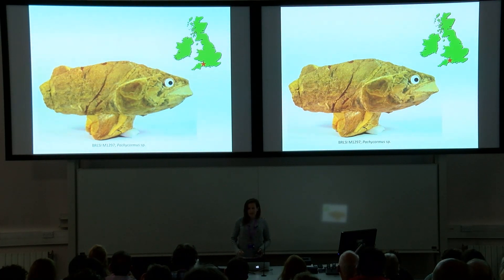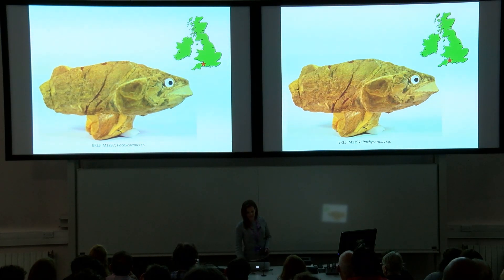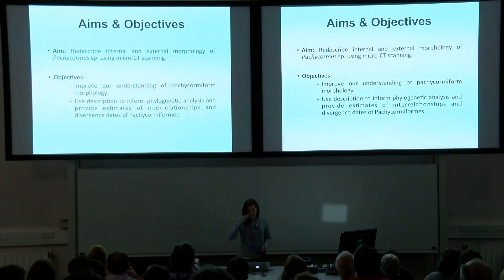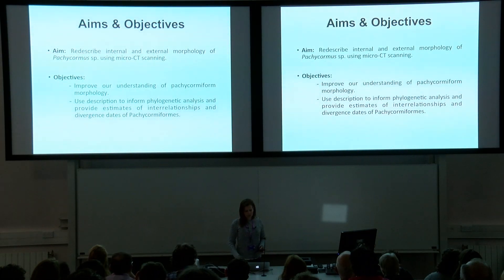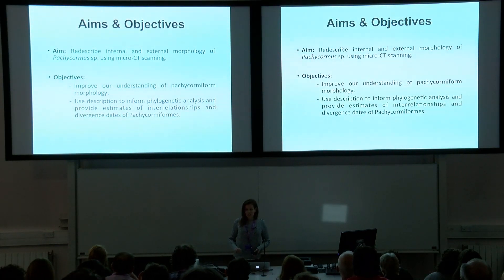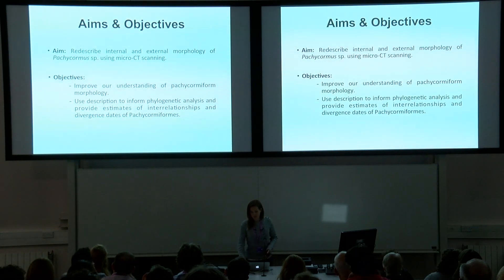We're using Pachycomus because it is generally the type species used to represent pachycomiforms in stem teleost studies, and it is quite an early diverging example. Very recently, scientists at the University of Bristol described the external structures of Pachycomus, meaning I can focus on the internal structures using CT scanning. The aim of my project is to scan and re-describe the internal and external anatomy of Pachycomus to improve our understanding of pachycomiform morphology, ecology, phylogenetic position, and their interrelationships and divergence times.